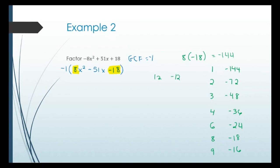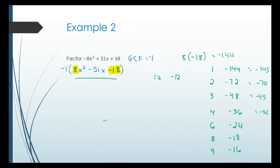We've now written down every single combination that multiplies to negative 144, and none of them add to negative 51. So the inside part is prime — there's nothing more that can be factored, because we've tried every possible combination and none will get us to that middle term.